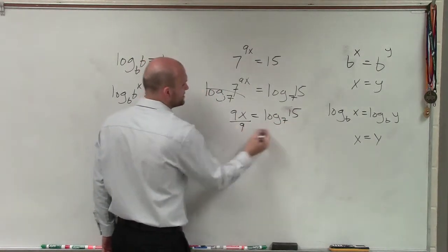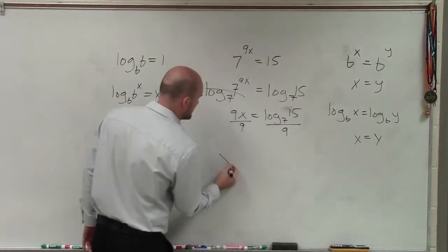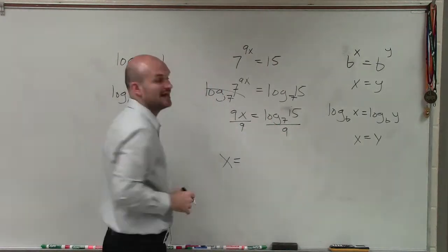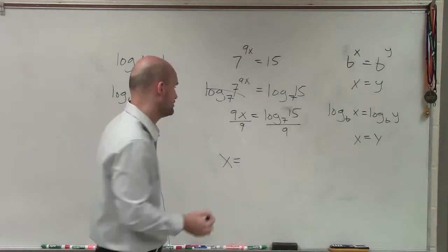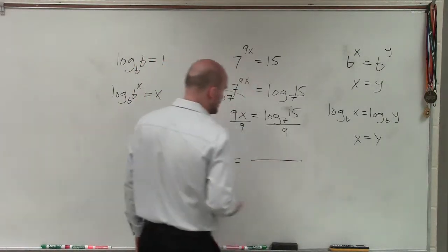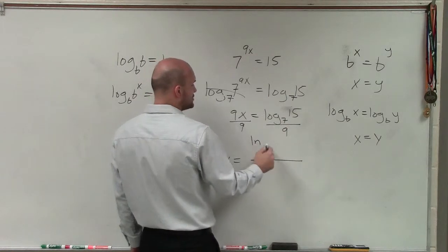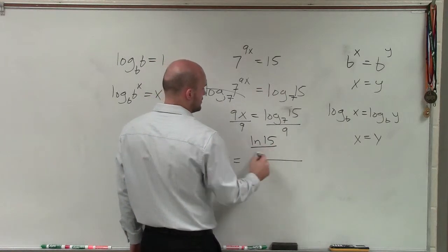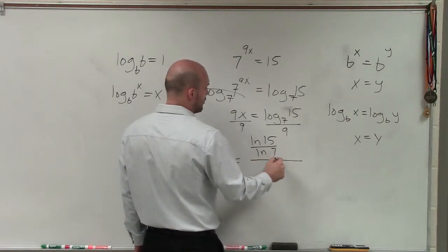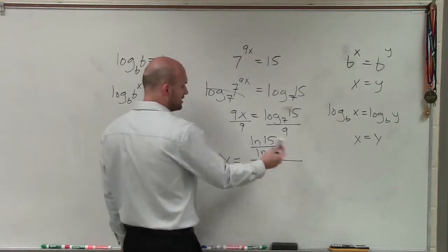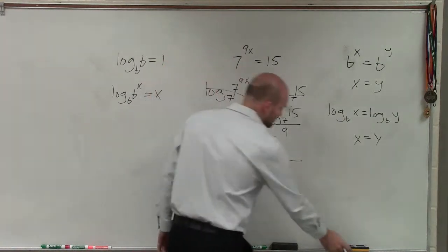Then I need to take that value and divide 9 on both sides. So therefore, x equals. Now, how are you going to evaluate log base 7 of 15? Well, what you can do for that is use your change of base. And you can use change of base by using natural logarithms, or a common log in your calculator, and then dividing that value by 9.